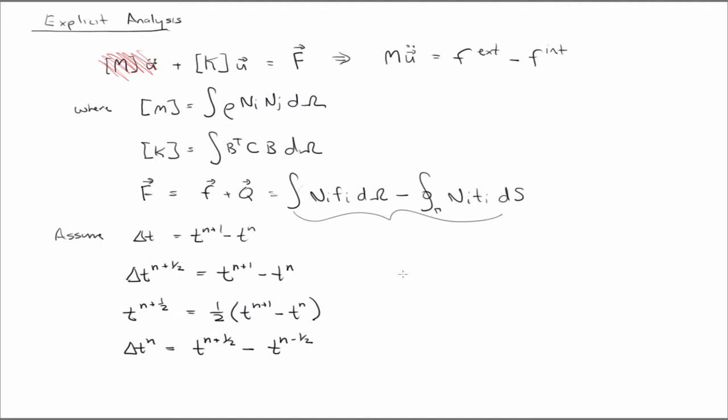With that, we can use central difference to approximate the velocity. The first time derivative of u is the velocity. And then we can approximate the acceleration, the second time derivative of u, or a, based on those velocities.